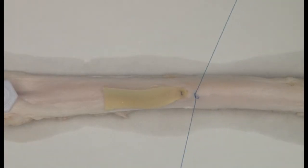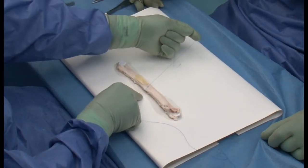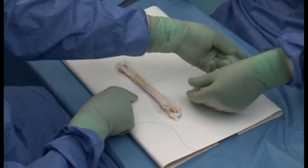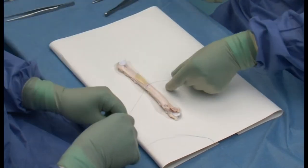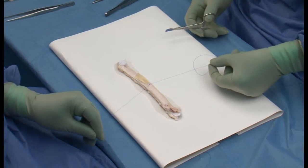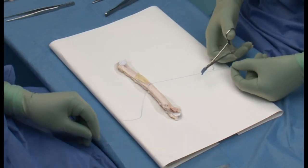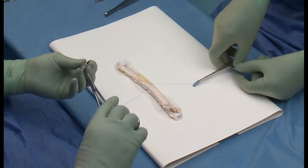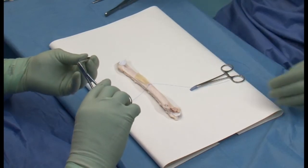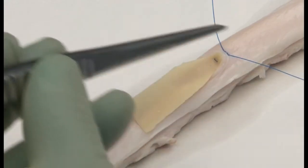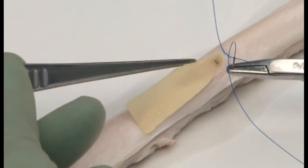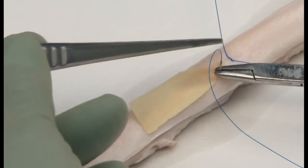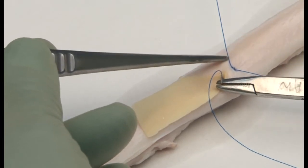Tie the suture using two throws of a formal reef knot. Place one in a rubber shod hemostat. Then using the other needle, work down the far side of the arteriotomy - from outside to inside on the graft and inside to outside on the artery.